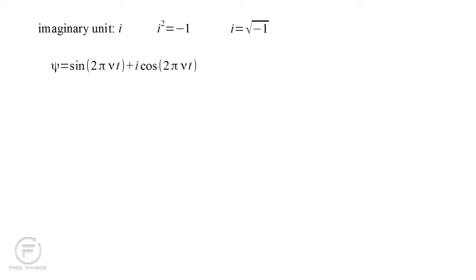Assume the field has a real part, sine two pi nu t, plus an imaginary part, i cosine two pi nu t. The field's slope in time, psi dot, is then two pi nu times the cosine minus i two pi nu times the sine. Multiply this by i times h-bar.